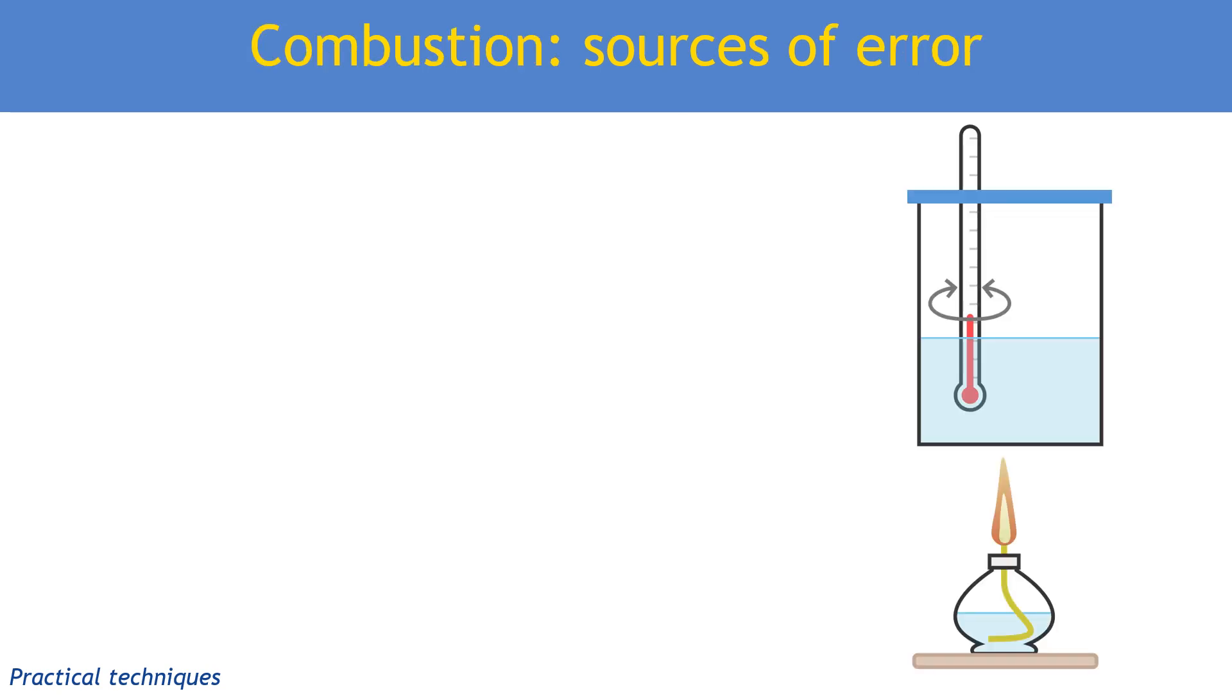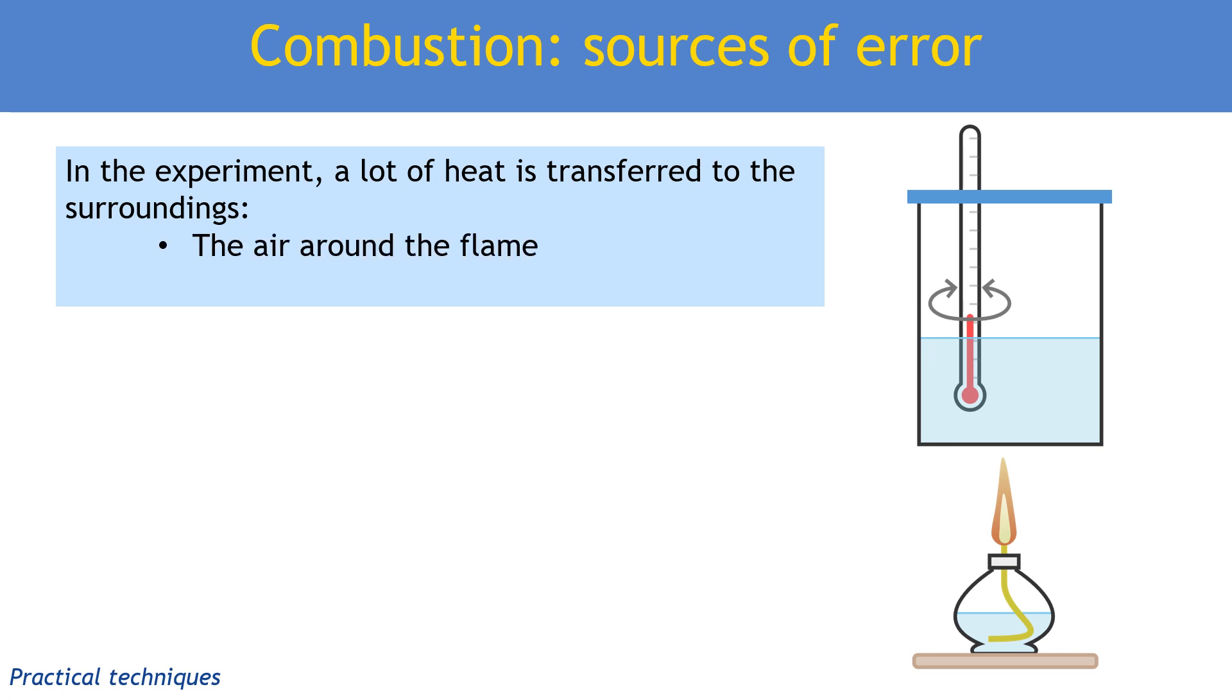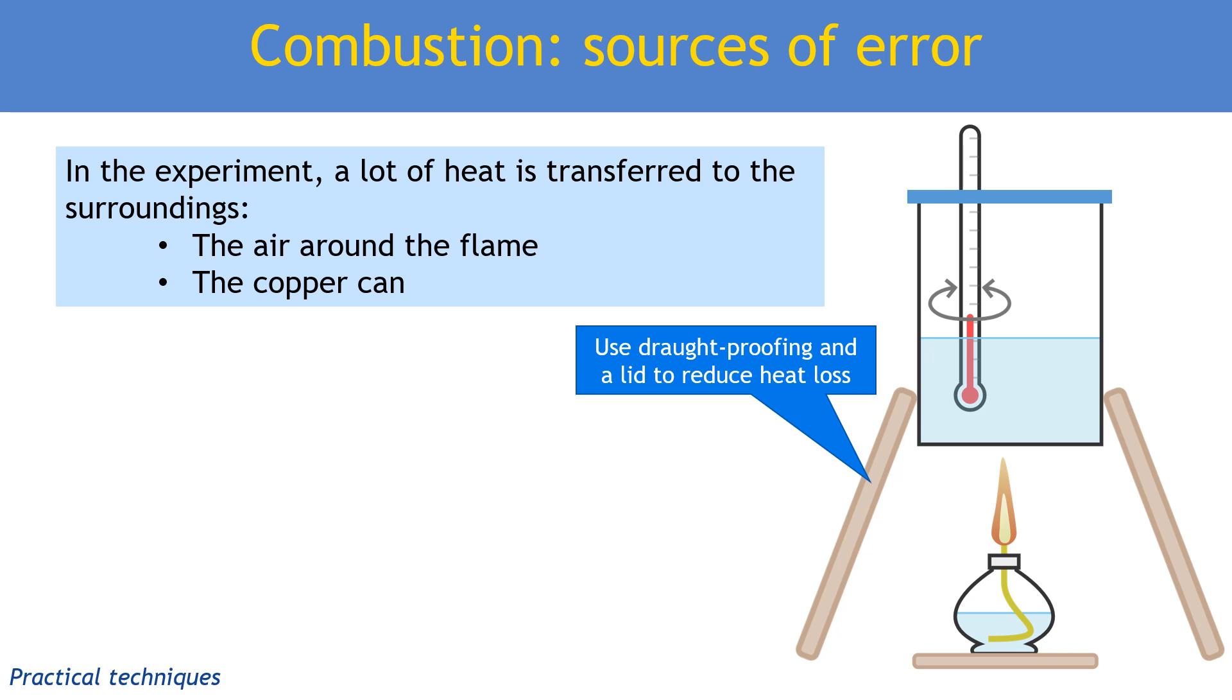The main source of error in this combustion experiment is heat transferred to the surroundings, meaning anything not the water, since water is in the q equals mc delta T equation. This could be the air around the flame but also the copper can itself. We can minimize it by putting heat mats around the flame to exclude drafts and by putting a lid on the can, but we're still going to get lots of heat loss in this experiment.